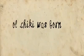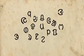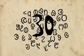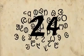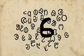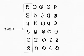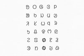In the year 1925, Ol Chiki was born. It had 30 letters: 24 consonants and 6 vowels. The script had one unique aspect.